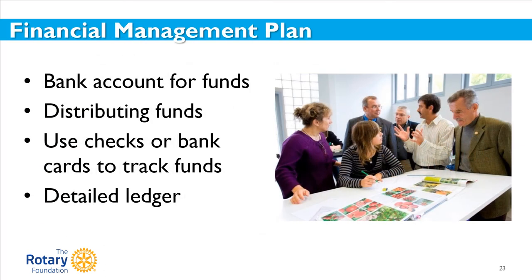Your club should have a club-controlled bank account used only for global grant funds. A separate account should be opened for each global grant received, which will assist you in keeping accurate financial records. Once your club receives grant funds, it is important to have a plan for distributing and tracking funds. For example, if you are sponsoring a scholar, the plan should specify when and how your club will distribute the funds to the scholar. Expenditures should be made using a trackable method, such as a check or bank card, and you should keep track of transaction details.